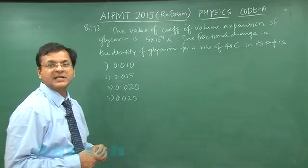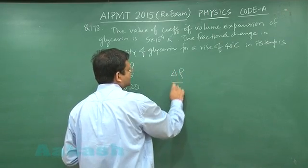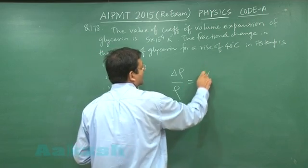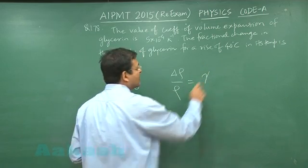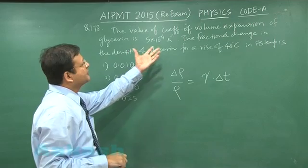This question is directly formula-based. I will use the expression for fractional change in density, which is the coefficient of volume expansion gamma multiplied by the change in temperature: gamma delta T. The question states that the coefficient